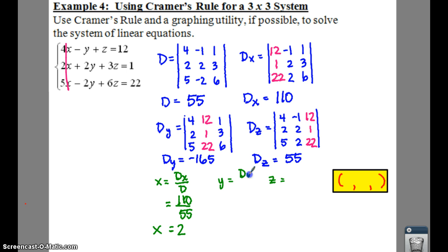So then for y, that's just D sub y divided by D, which ends up giving you negative 165 divided by 55. These are all coming out so nice and pretty. So, you get y equals negative 3.